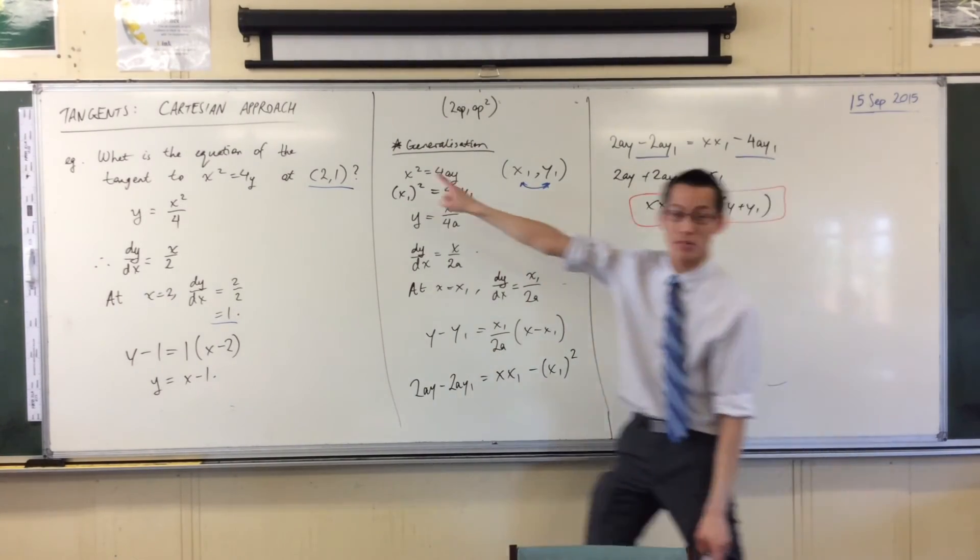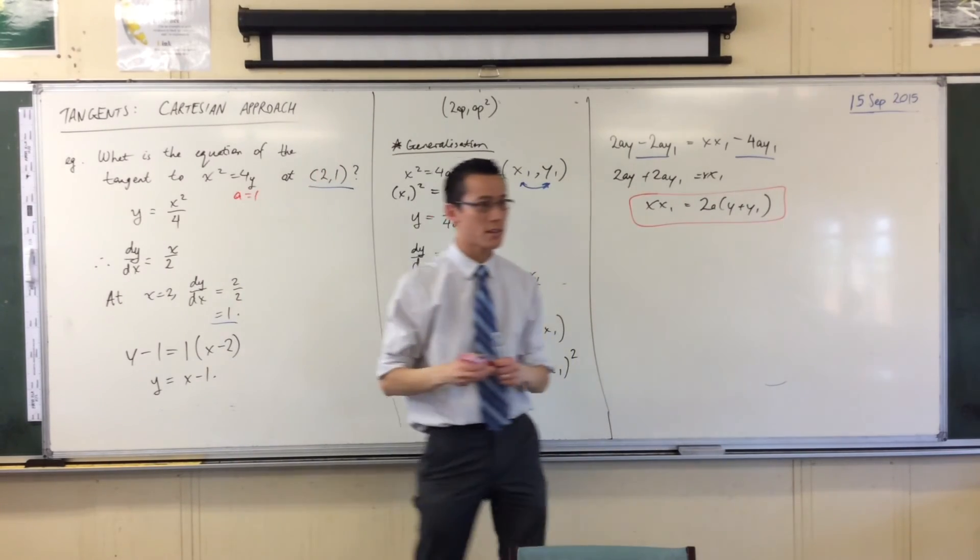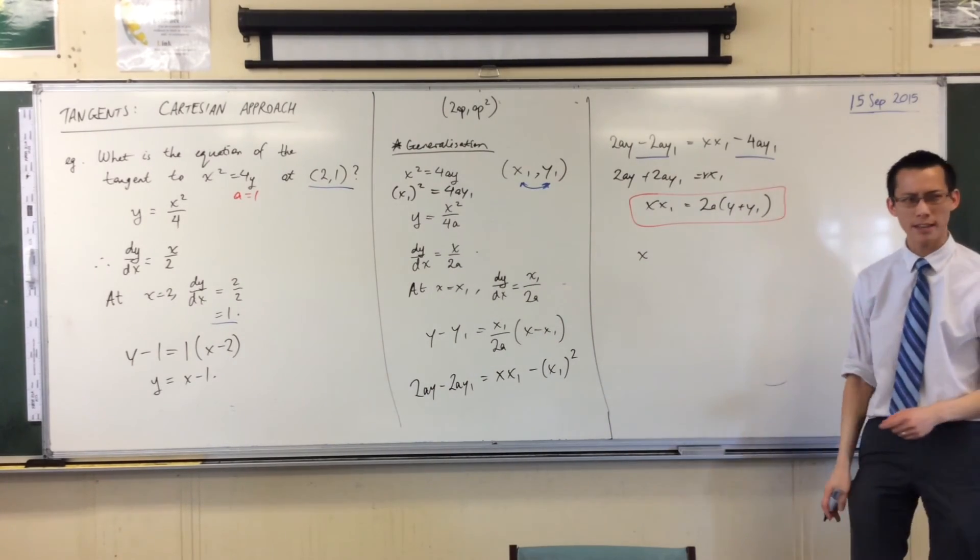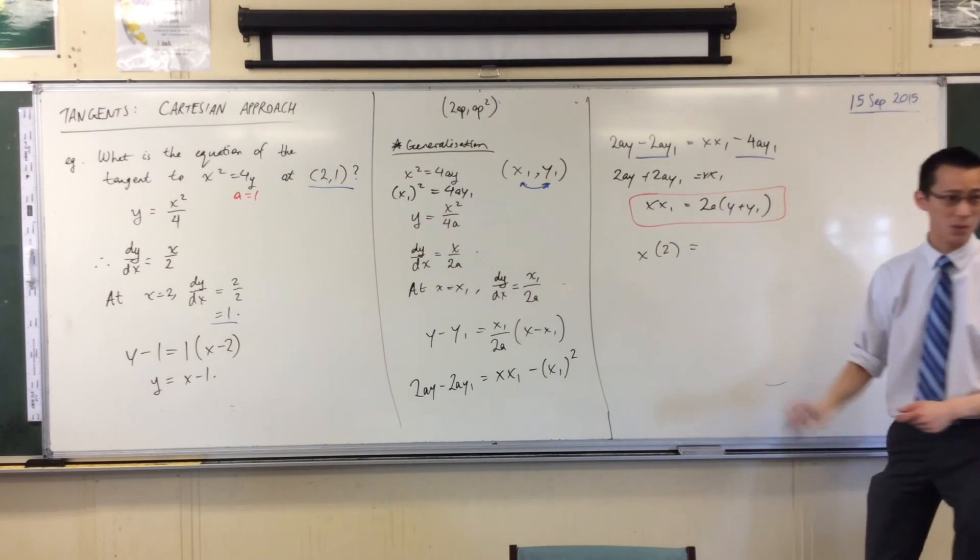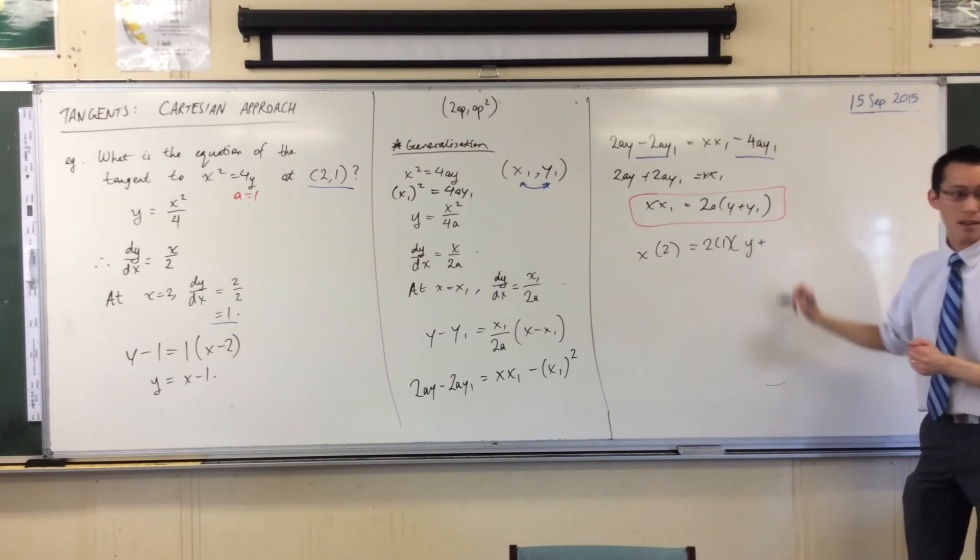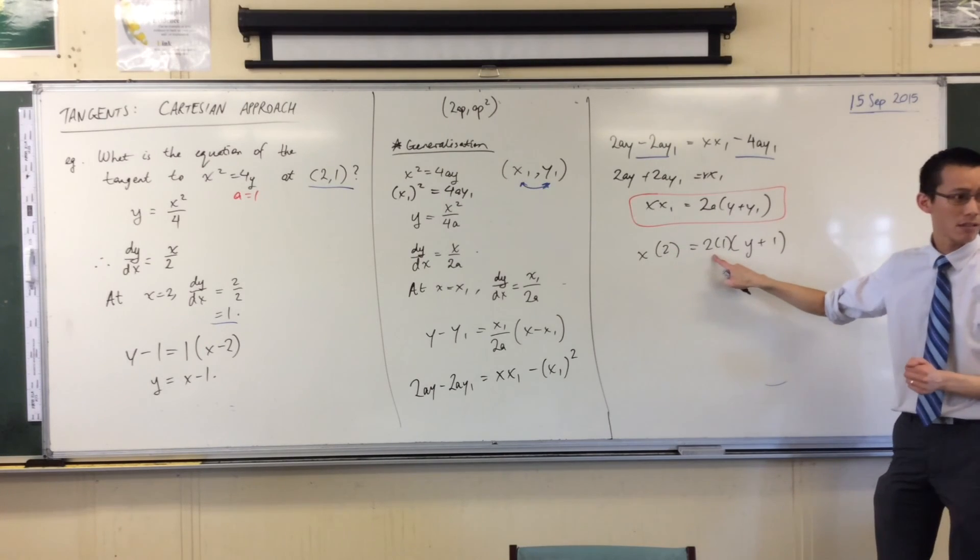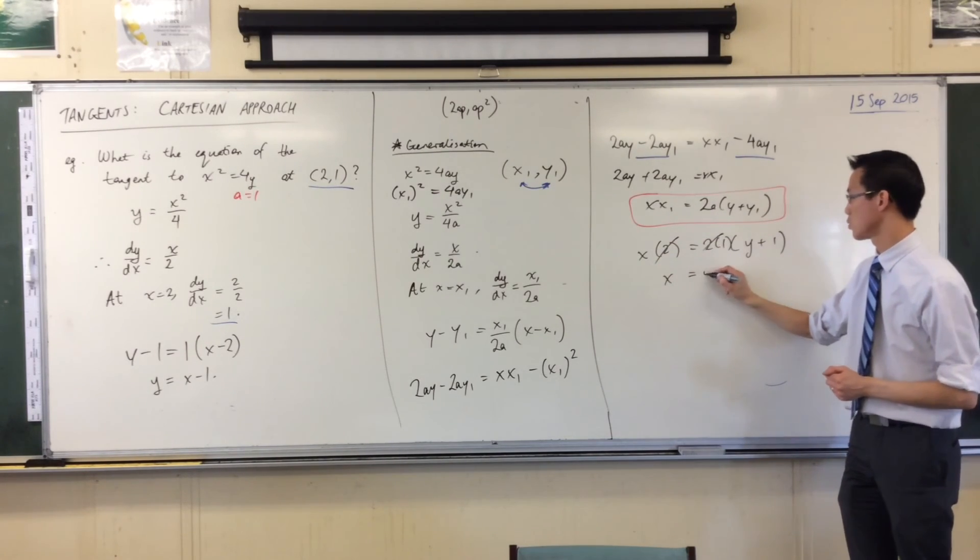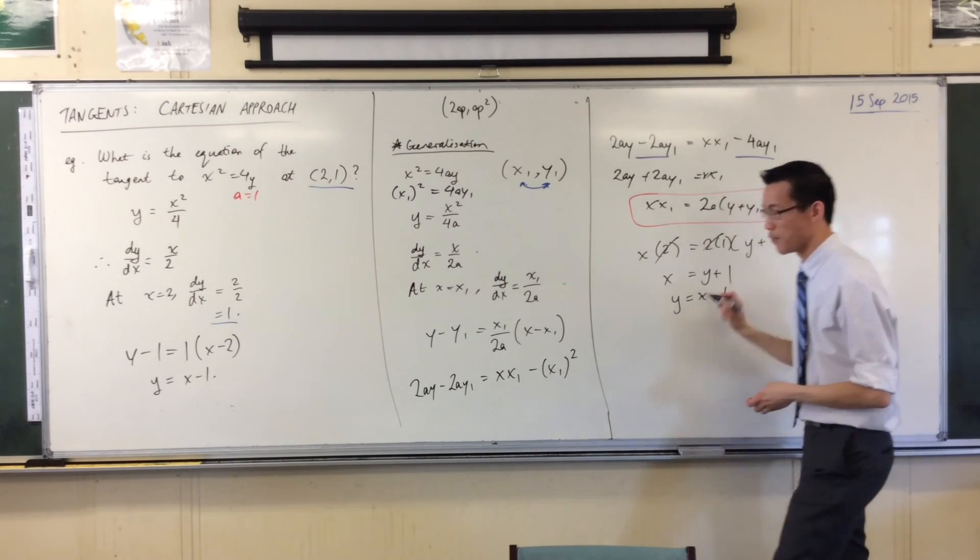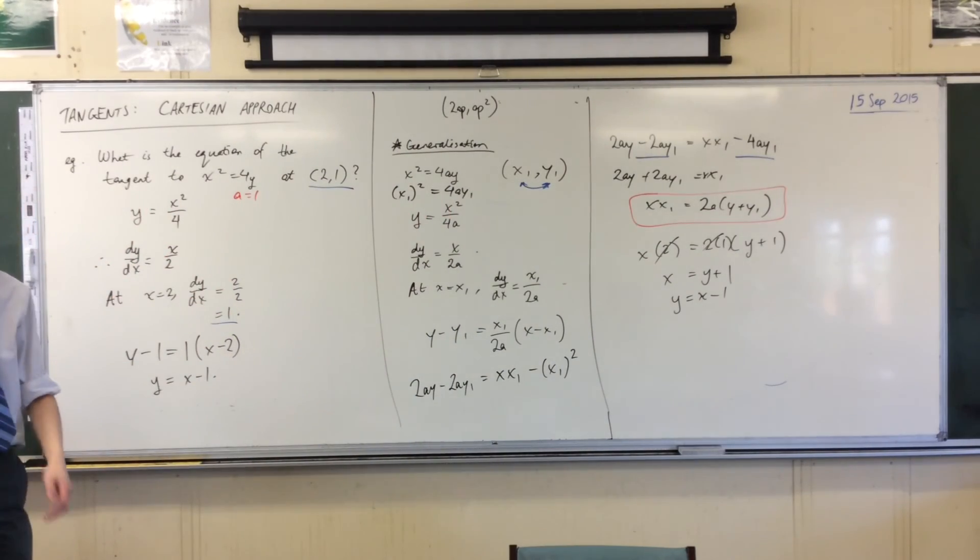That was the question we started with. And you already told me right at the beginning that A is equal to 1. Yes? Let's just try it out. See what happens. XX1. What's X1 again? It's 2. Equals 2 times 1 times Y plus 1. Let's have a go. I've got a 2 there and a 2 there. Bam, bam. X equals Y plus 1. Make Y the subject. It just falls out. You hardly even need to work. You just need to substitute a little bit and Bob's your uncle.